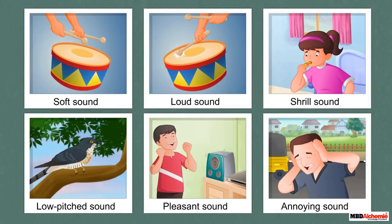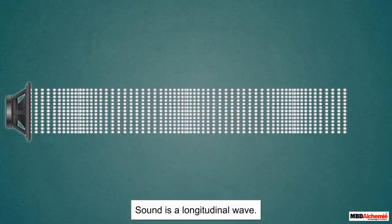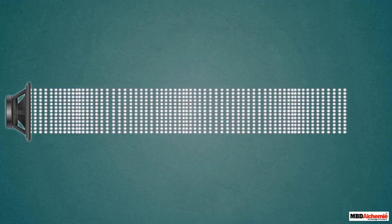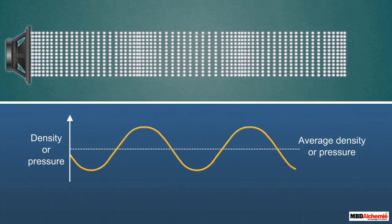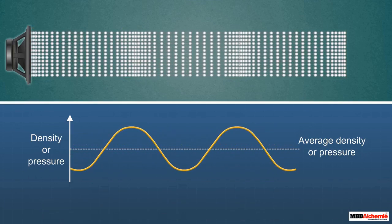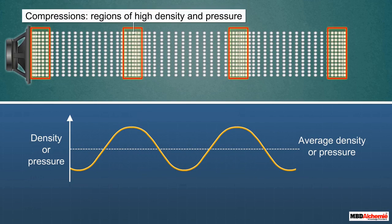Before understanding what makes these sounds different from each other, let us recapitulate how sound travels. Sound is a longitudinal wave, and sound waves move in a medium as a series of compressions and rarefactions. We can represent sound waves in a density or pressure graph. Compressions are regions where particles are crowded together, represented by the upper portion of the curve. The peak represents the region of maximum compression, where density and pressure are high.